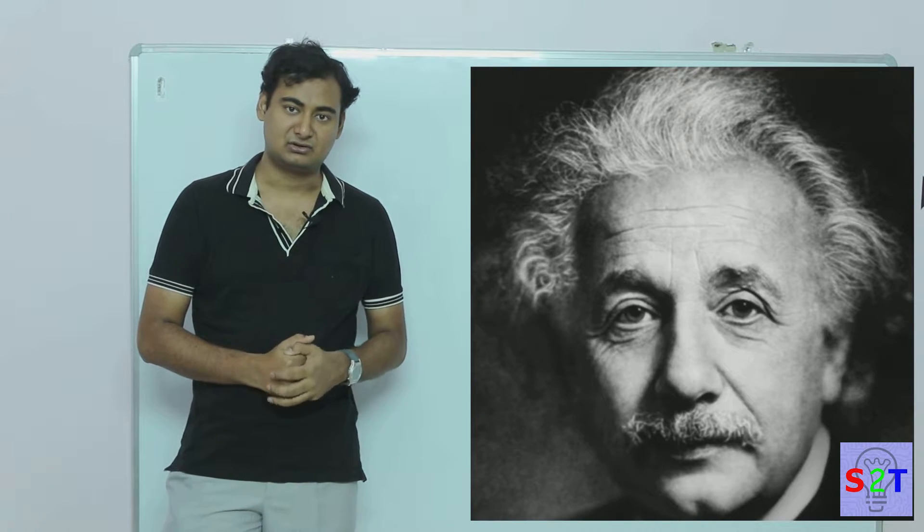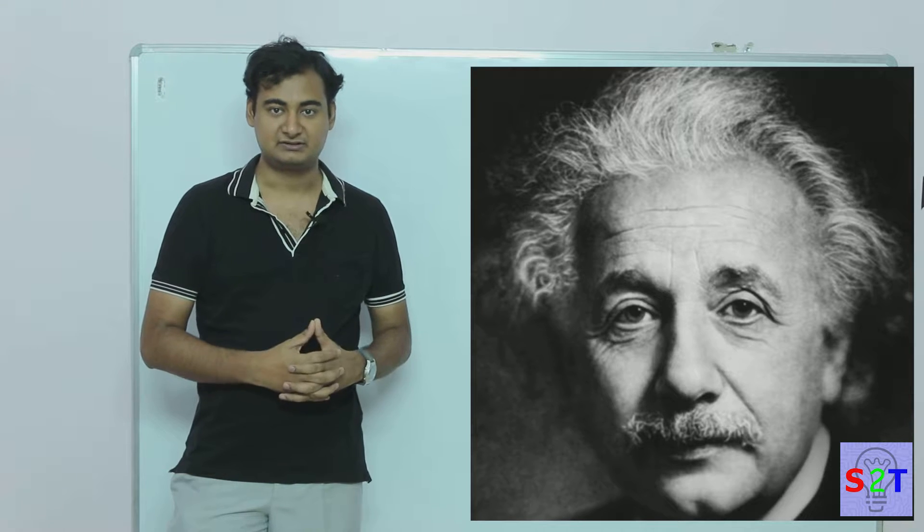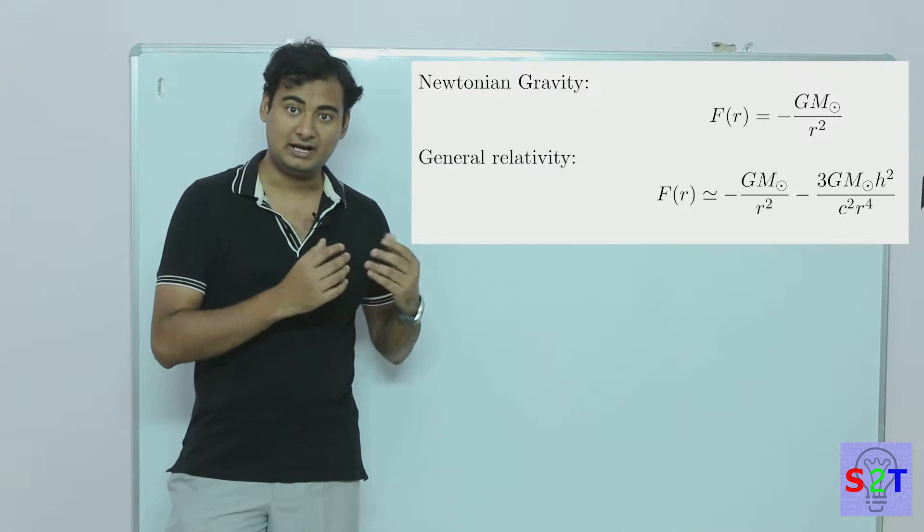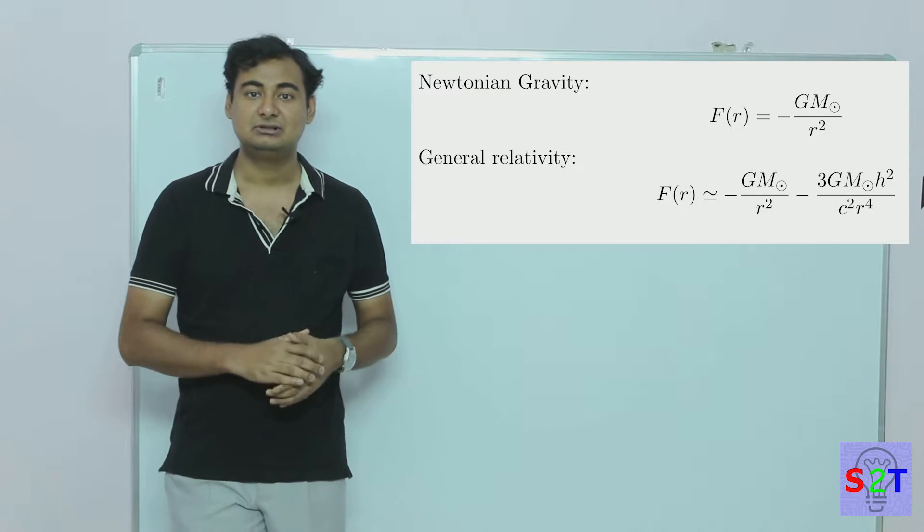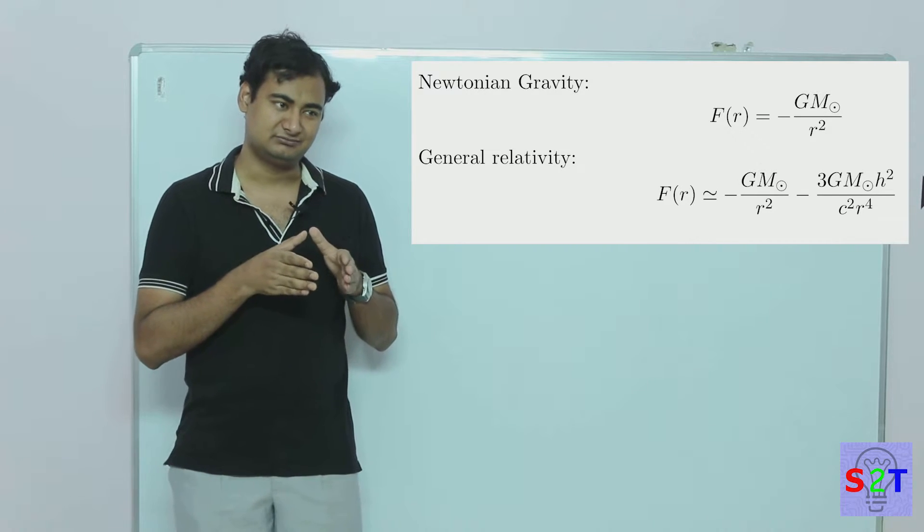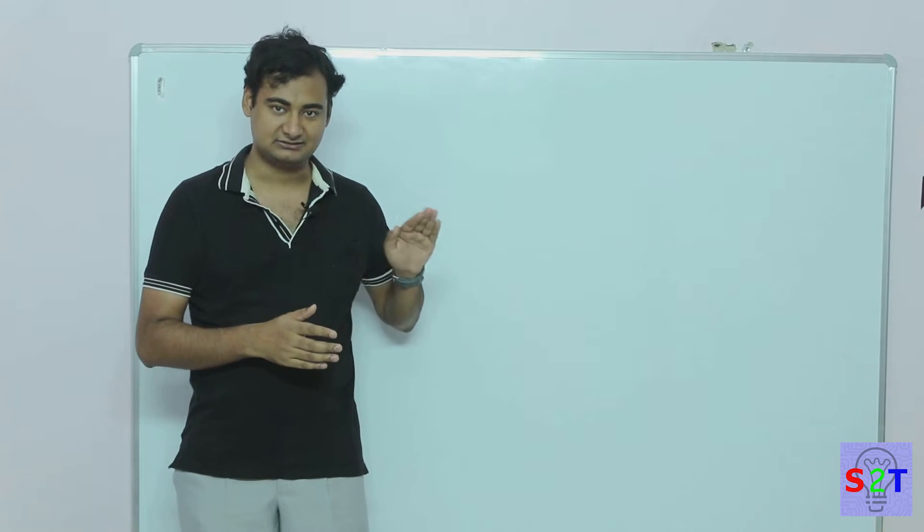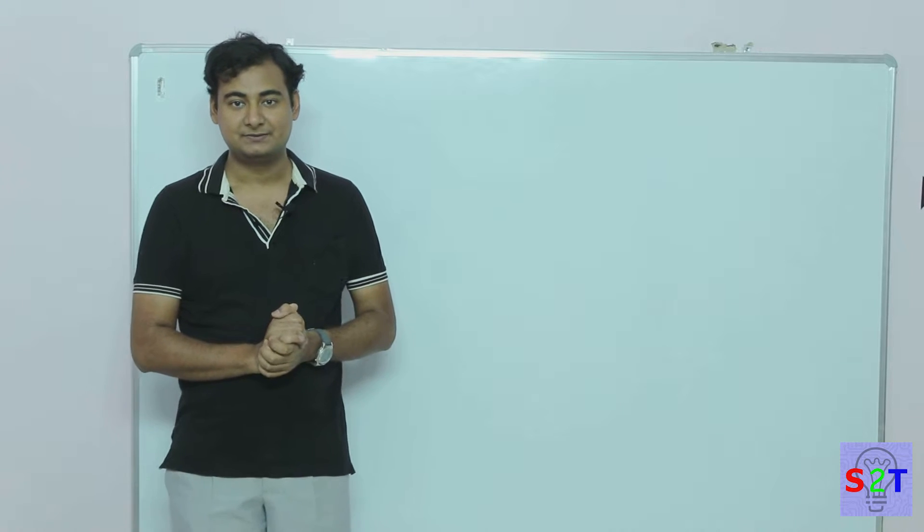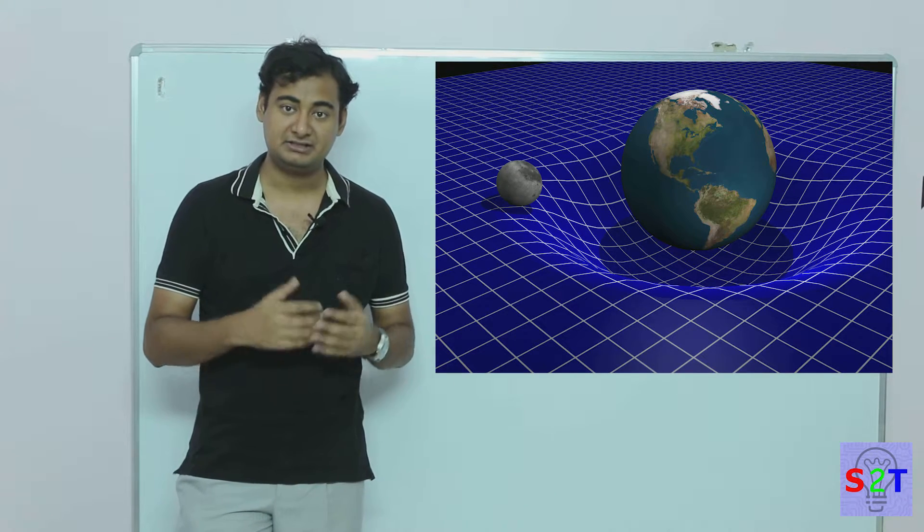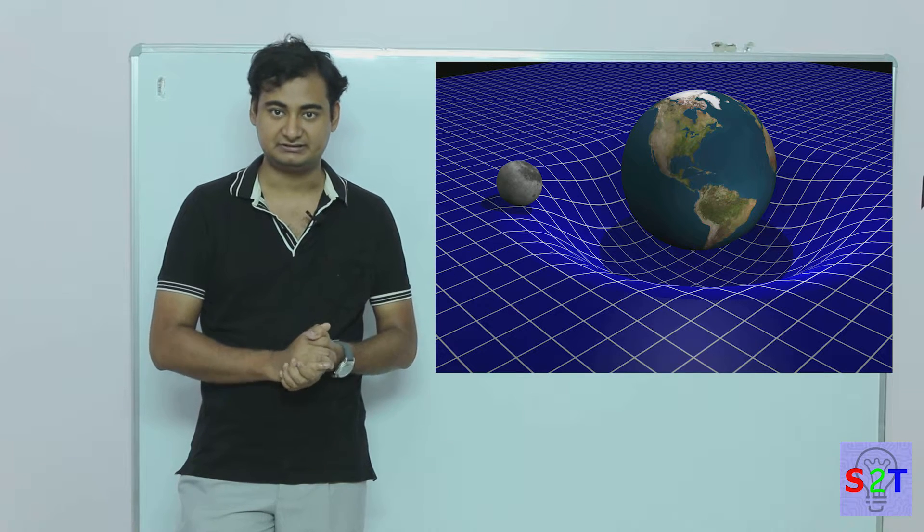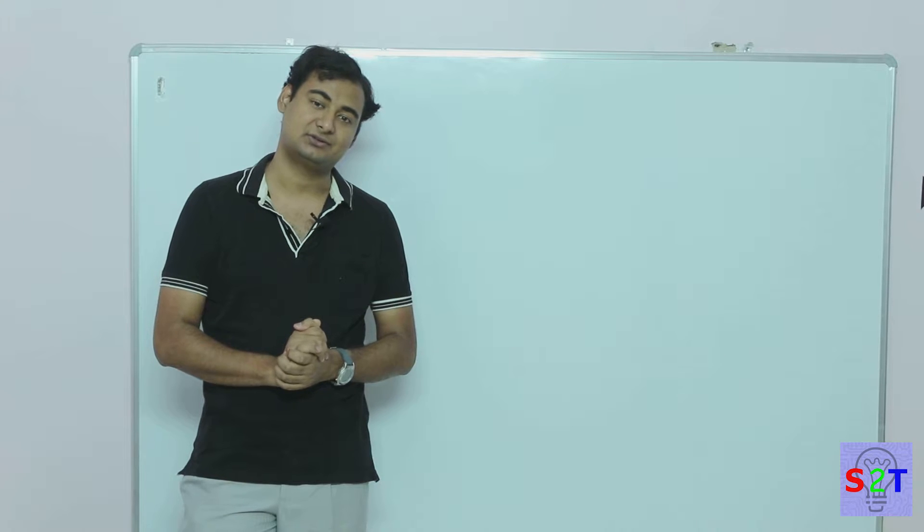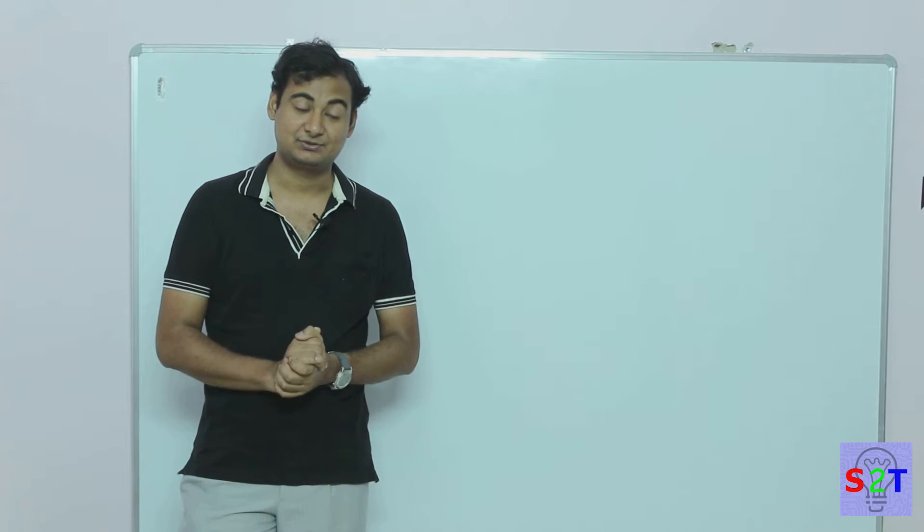Then Einstein comes along and defines that mathematics. Newton got the idea that there is gravity; Einstein explained why there is gravity. To the current extent, we haven't gone much closer than that. In basic sense, mass creates space-time bend which we perceive as gravity. That's all we know about gravity as of this recording.